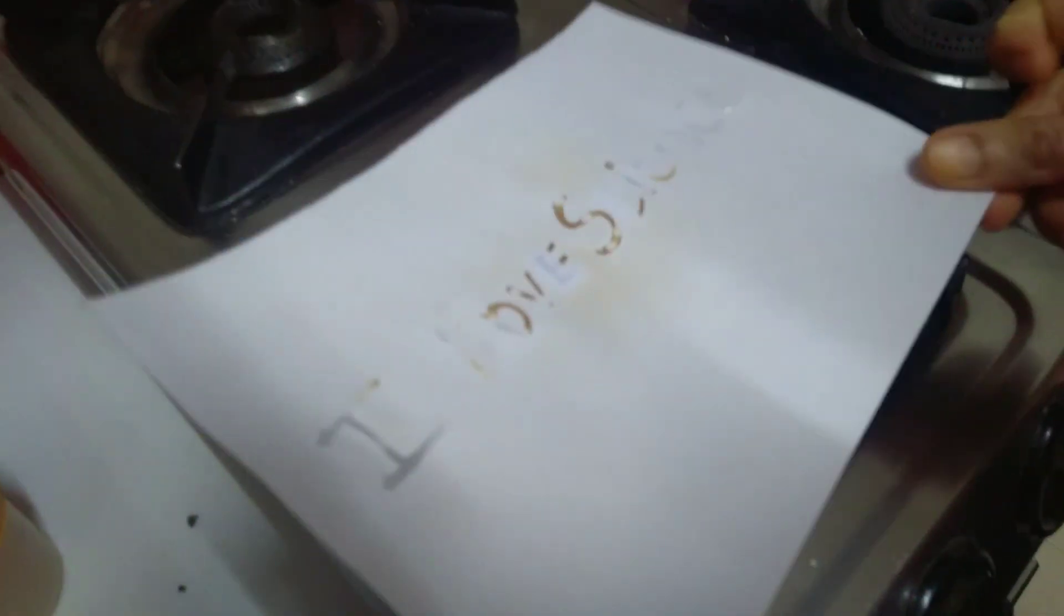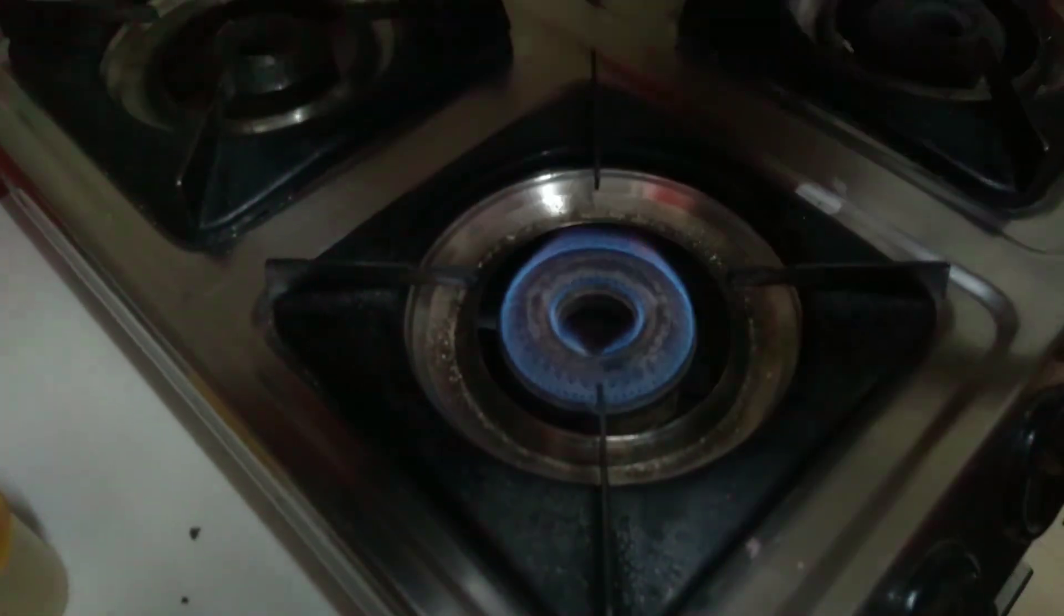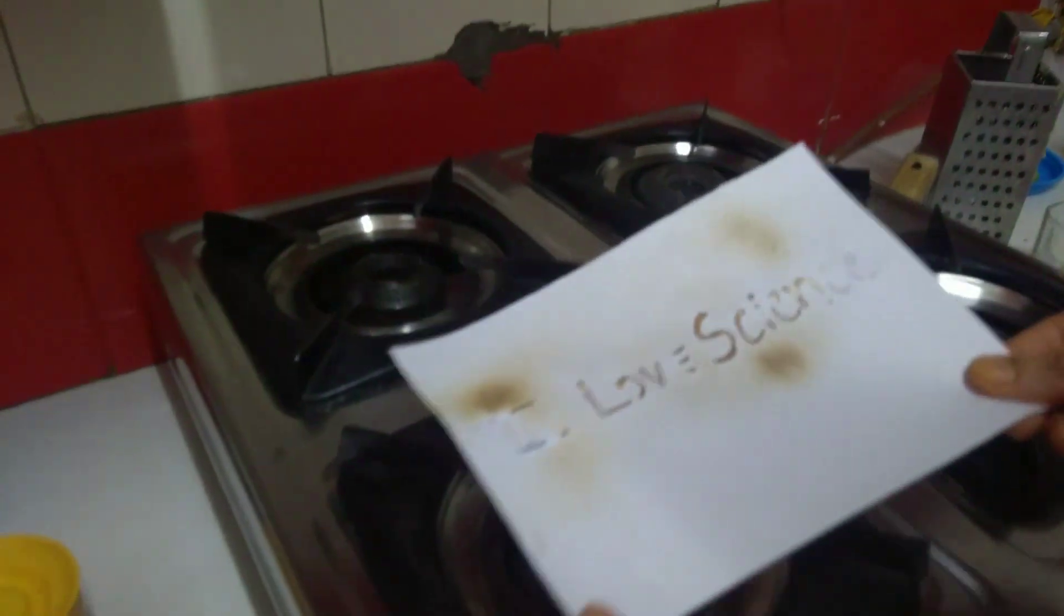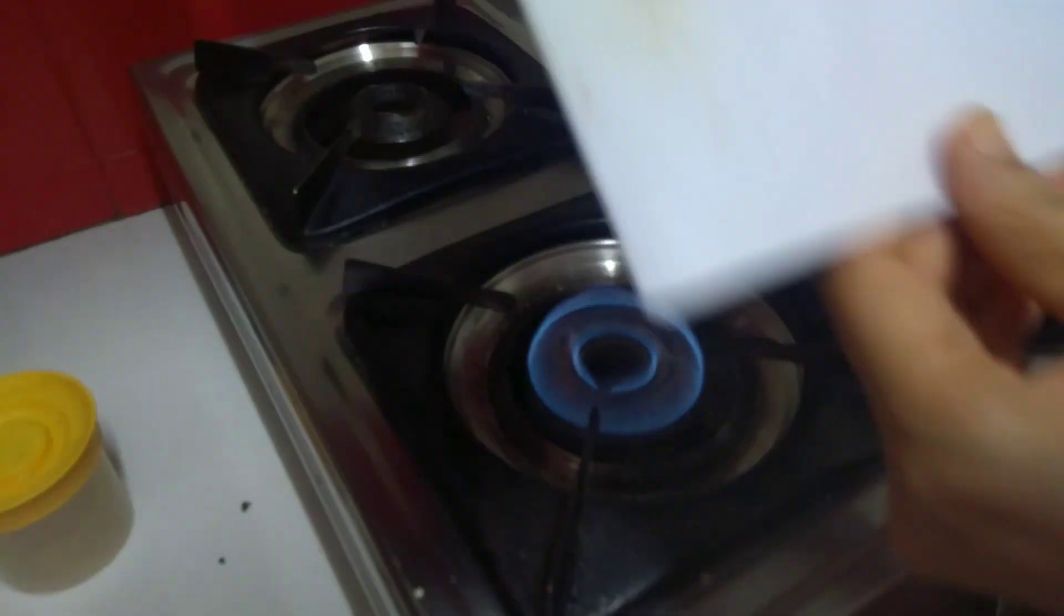You will gradually see the letter starting to become visible. My letter is completely visible now. It is yellow in color.